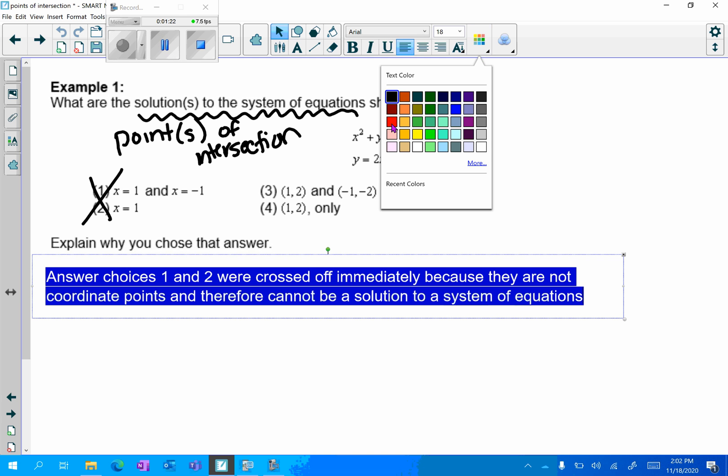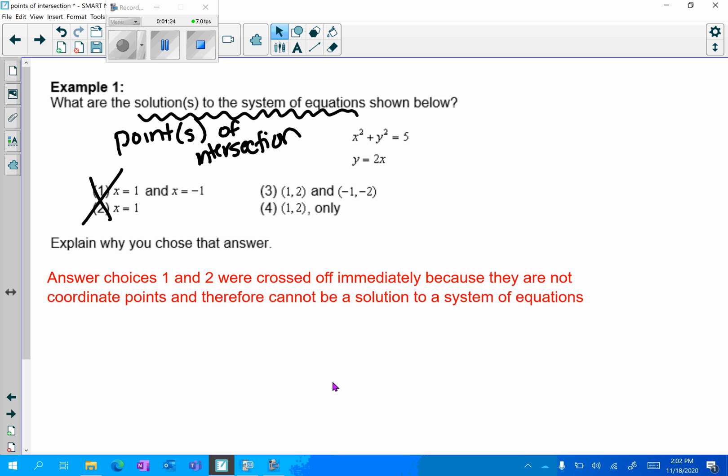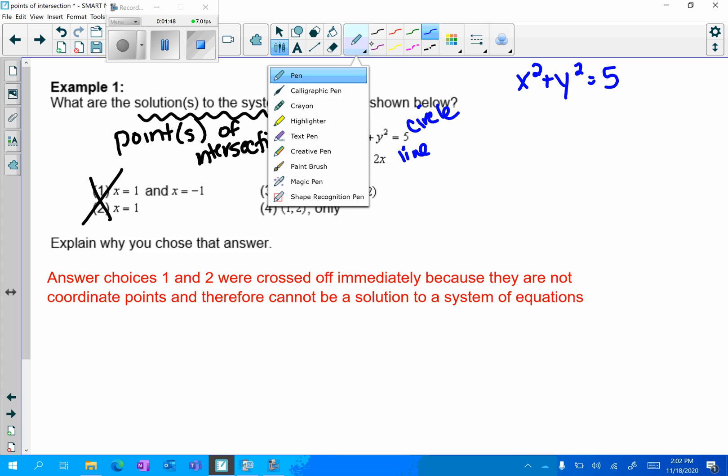We should know by now that our first equation is a circle because I have an x squared and a y squared, and our second equation is a line. You don't have to label them but it's important to keep those things in mind. Whenever we have a circle and a line we solve with substitution. So I have x squared plus y squared equals 5 and I'm plugging in that y.